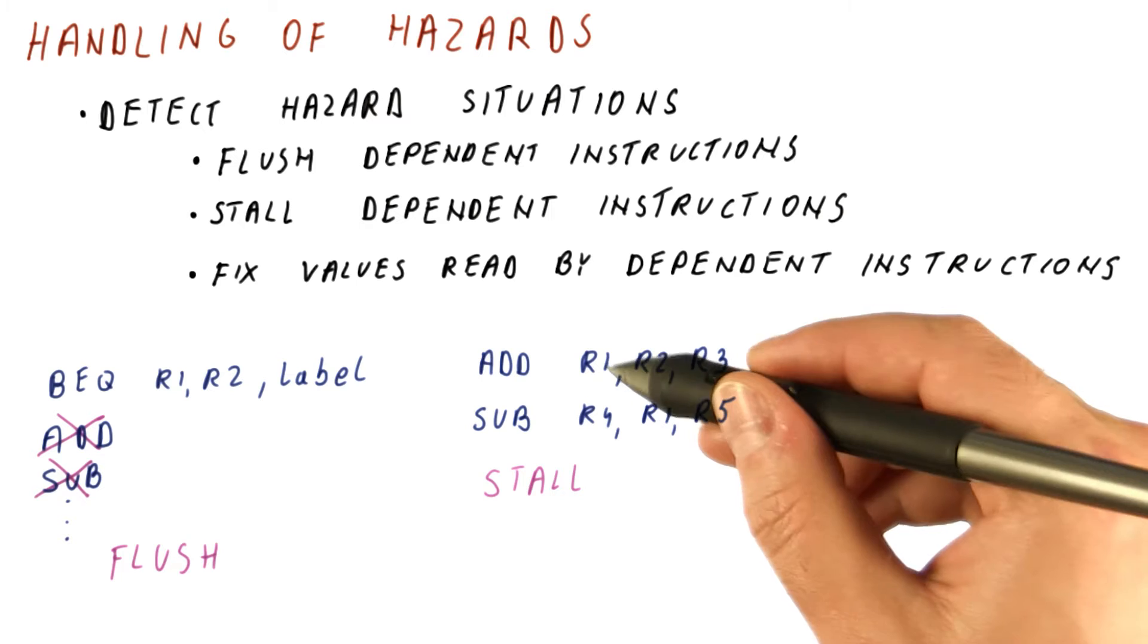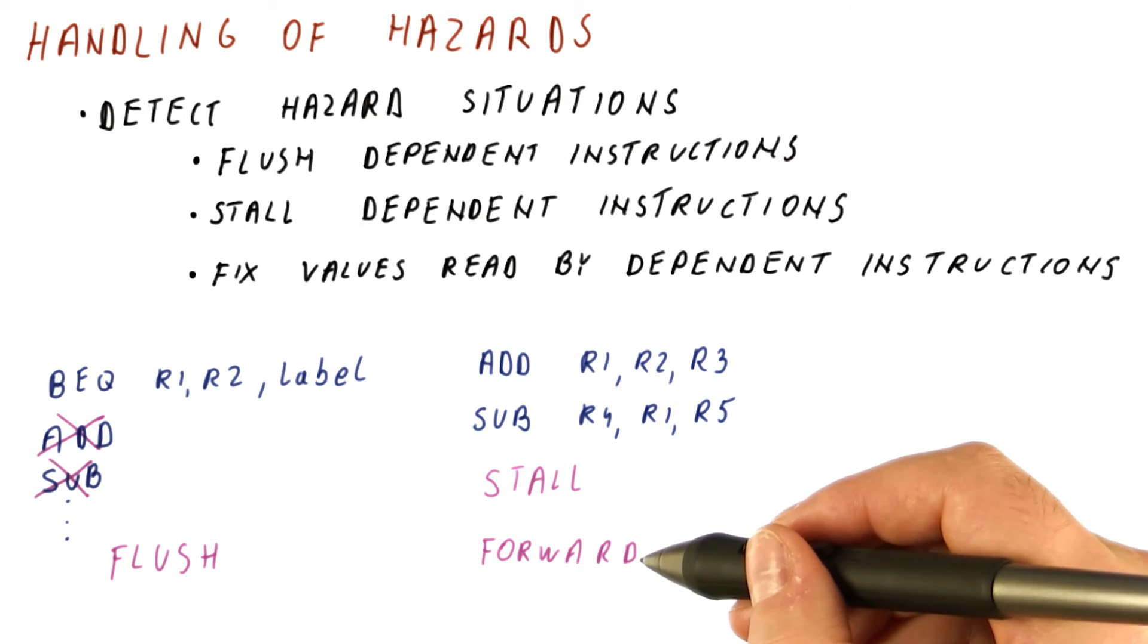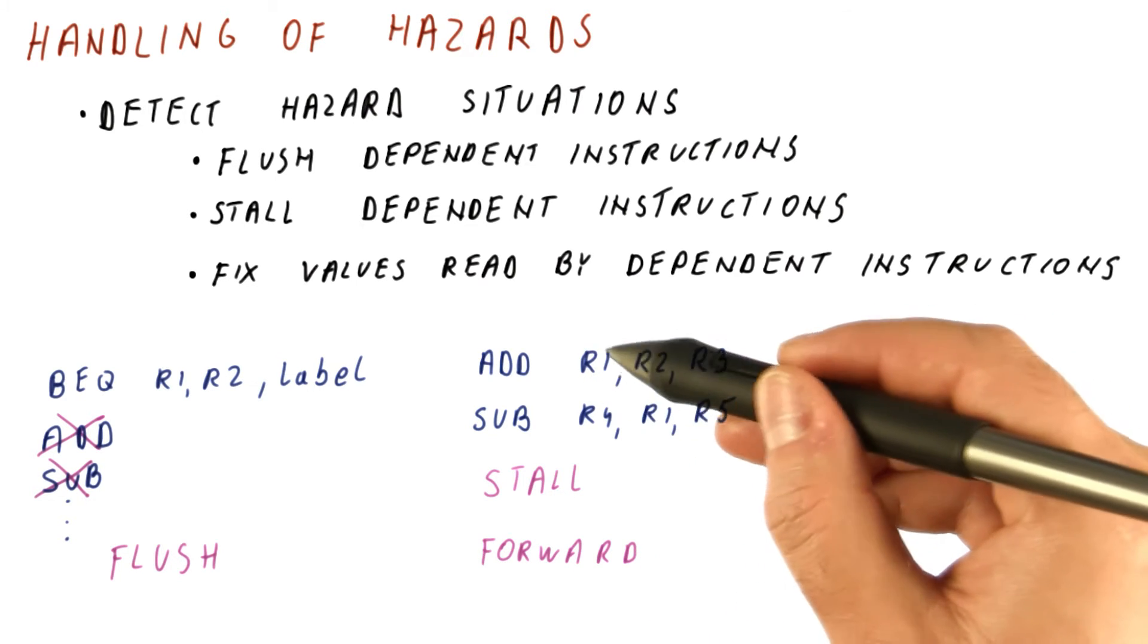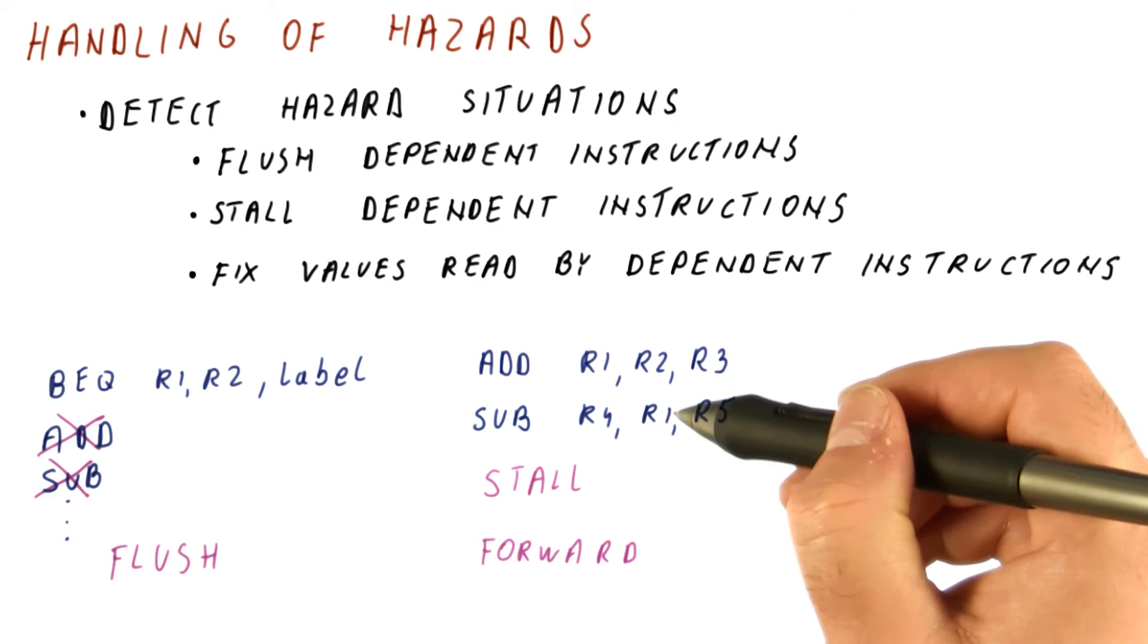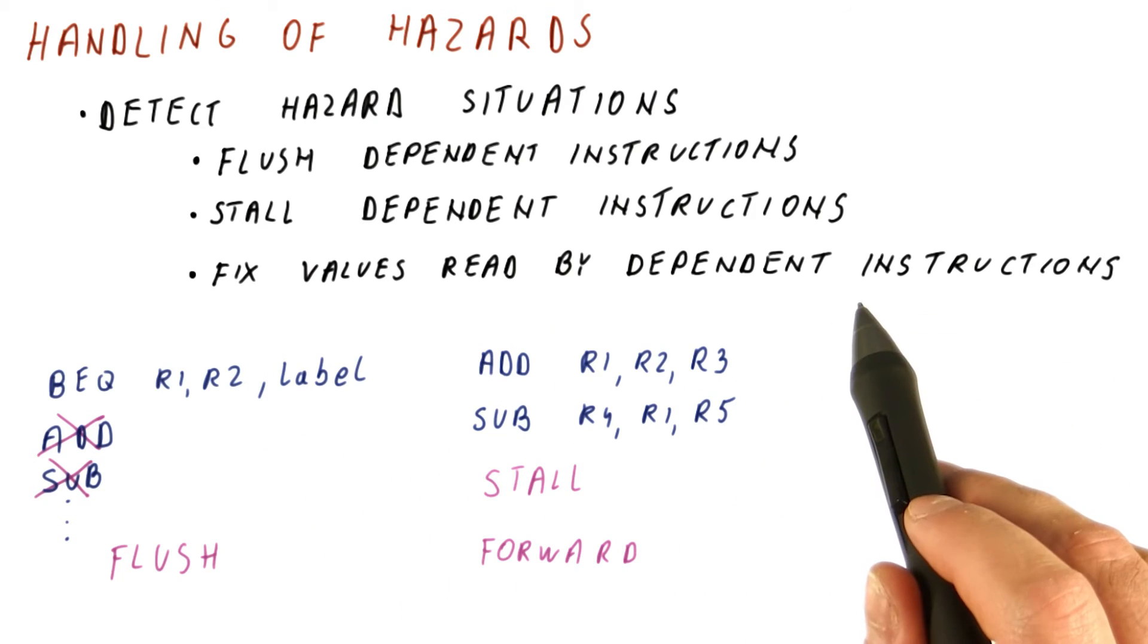For some data dependencies, we can even forward the value of R1 produced by the add to the subtract in a way that fixes the value read by the subtract.